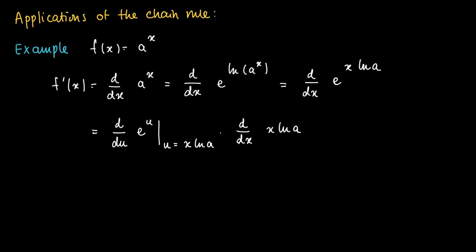So what we obtain is the derivative of the outer function, which is the exponential function e^u, evaluated in x ln a. So we get e to the power x ln a times the derivative of the inner function, which has the derivative ln a, just a constant in front of x.